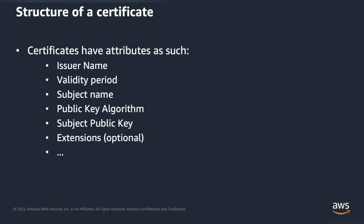Let's talk about the structure of a certificate. Certificates have such attributes as the issuer name, the validity period, the subject name, public key algorithm, the subject public key, as well as optional extensions. All of these attributes can be predefined by a PKI operator for end users to create, and you may want to restrict or specify certain attributes for your organization.